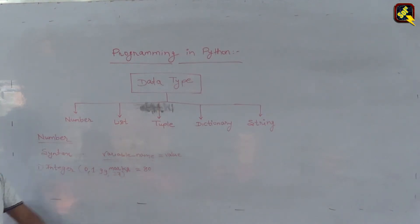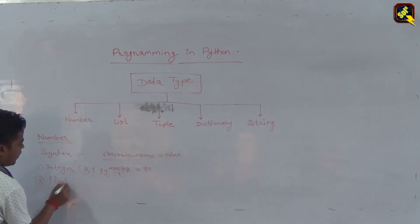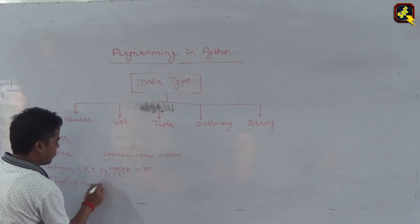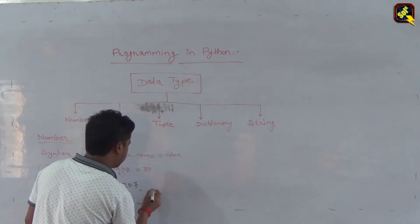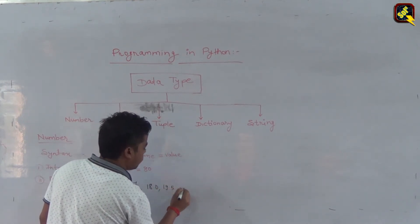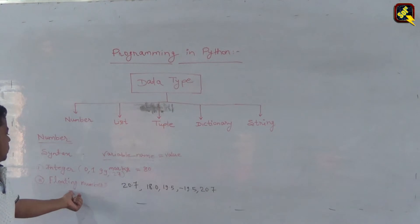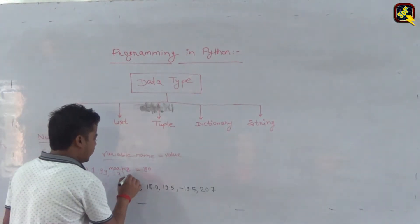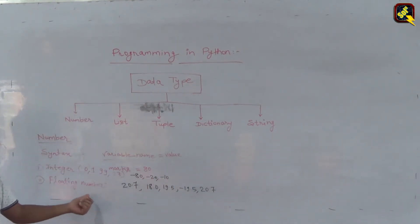The second sub-type is floating point numbers, like 20.7, 18.0, 19.05, minus 19.05. Negative integers can also be stored, like minus 80, minus 20, minus 10.